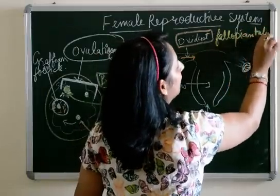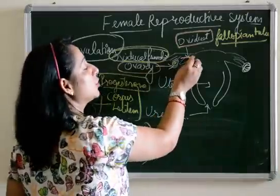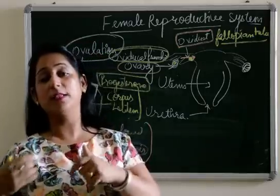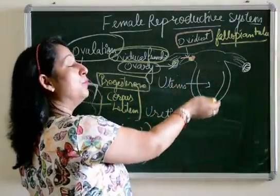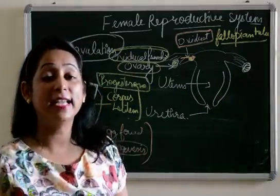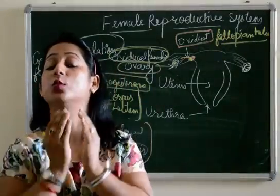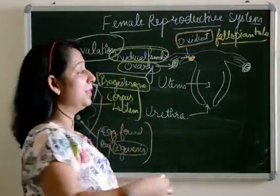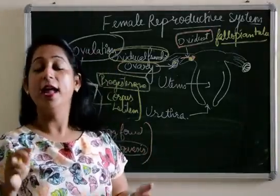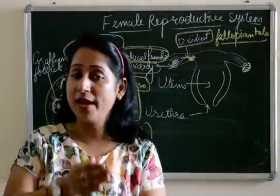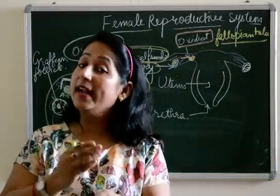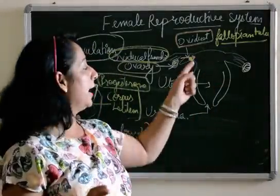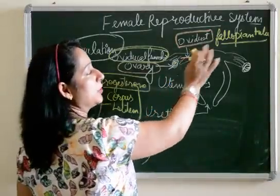The oviduct is also known as the fallopian tube, and it is a very important part. When the egg reaches the oviduct and stays there for a while, if intercourse has occurred and sperms are present inside the female tract, the sperms will move and reach the egg in the fallopian tube. That is the process of fertilization — the fusion of sperm and ovum takes place in the fallopian tube. The function of the oviduct or fallopian tube is that the process of fertilization occurs here.